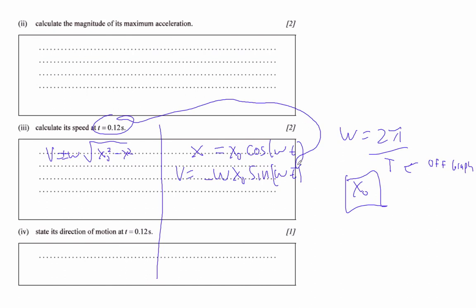And then just plug in 0.12 seconds for the time. And you'll get a velocity. And the velocity is between 0.3 and 0.4 meters per second.